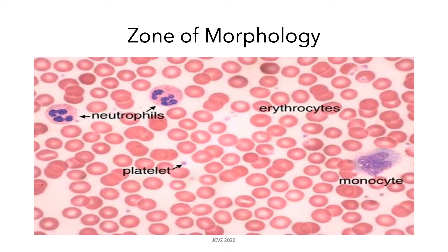Here you can see an example of what the zone of morphology looks like. You can see that there are different types of white blood cells, and most importantly, there is minimal overlapping of the red blood cells. A proper blood smear should have red blood cells that are pink to salmon in color and the nuclei of our WBCs should be violet.